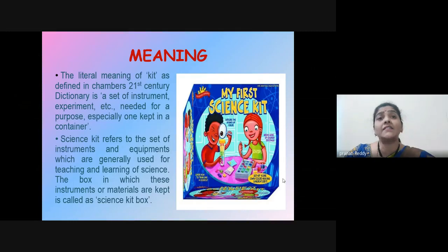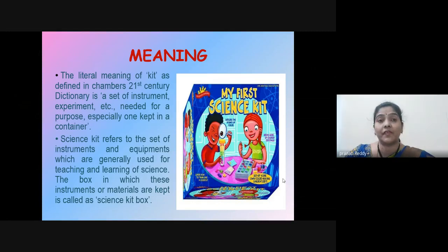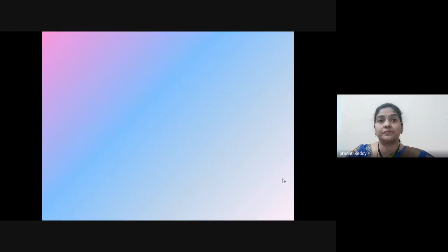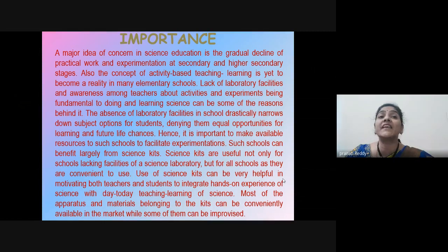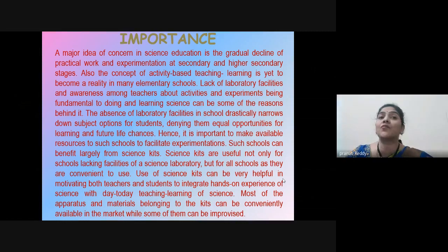Now let us discuss the meaning of Science Kits. The literal meaning of 'kit', as defined in Chambers 21st Century Dictionary, is a set of instruments, equipment, etc., needed for a purpose, especially one kept in a container. Science Kit refers to the set of instruments and equipment which are generally used for teaching and learning of science. The box in which these instruments or materials are kept is called a Science Kit box.